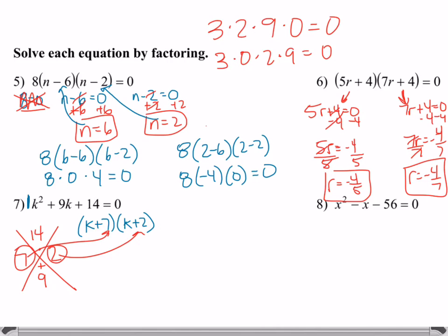Alright, so I already have my factors, because I was able to use the x-factor chart and then put them in two separate pieces. Now I can set each piece equal to 0. So k plus 7 equals 0, k plus 2 equals 0, and that would give me an answer of k equals negative 7, and k equals negative 2. That was my two answers for number 7.